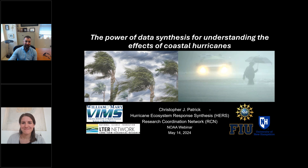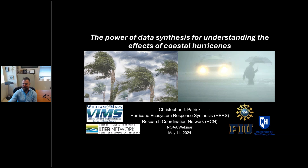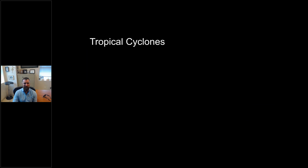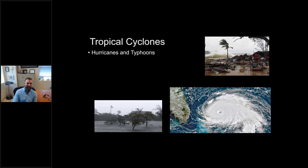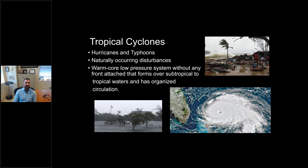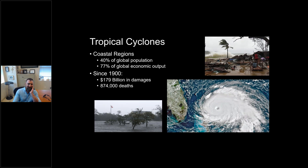Thank you for having me and thank you to all of you that joined today. Tropical cyclones — hurricanes or typhoons depending on what hemisphere you're in — are naturally occurring disturbances. They're warm core, low pressure systems forming over subtropical and tropical waters with organized circulation. These are really important storms to consider because they affect coastal regions, where a large portion of our global population exists and the majority of global economic output occurs. Since 1900, there's been over $179 billion in damage and nearly a million deaths directly attributed to hurricane events.